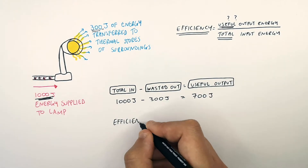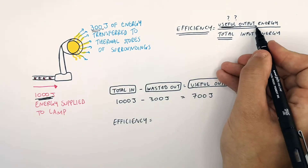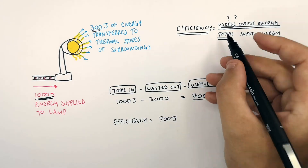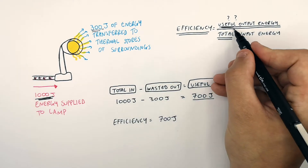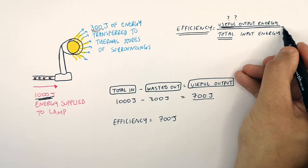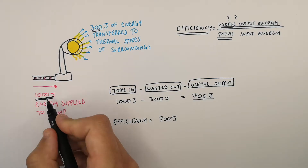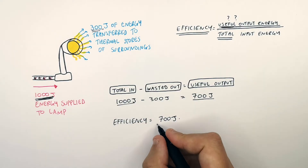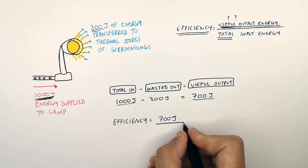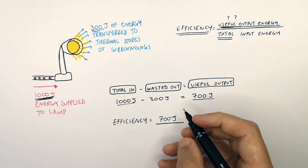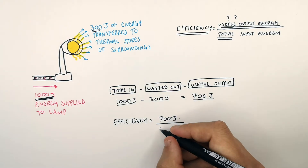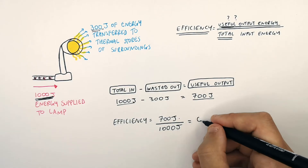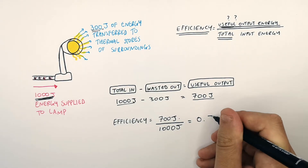To calculate the efficiency: efficiency equals useful output energy of 700 joules divided by the total input energy of 1,000 joules, which equals 0.7.